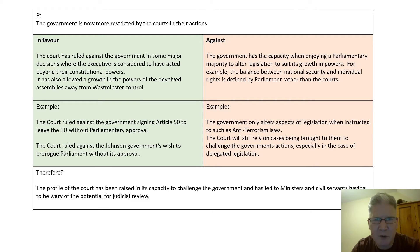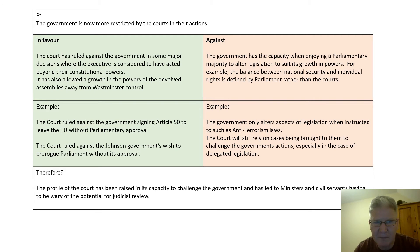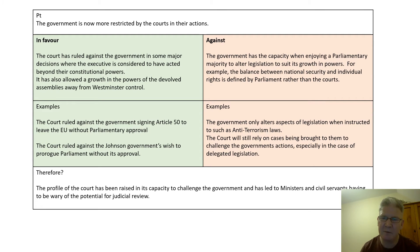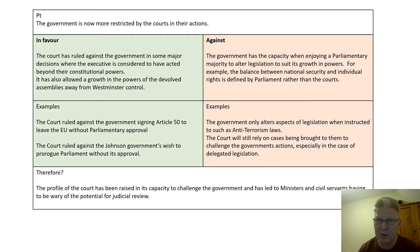Second assertion: the government is now more restricted by the courts in their actions. The court has ruled against the government in some pretty major decisions where the executive was considered to have acted beyond its constitutional powers, and has allowed for a growth in powers of devolved assemblies away from Westminster control. The two obvious examples were the signing of Article 50 beyond parliamentary approval, and the court ruling against Johnson's government wishing to prorogue Parliament without its approval. Arguments against this: the government is in a fairly strong position — with a parliamentary majority it has the capacity to alter legislation, and the balance between national security and individual rights is still defined by Parliament rather than the courts.